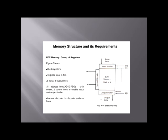Memory structure and its requirements: Read/write memory is a group of registers. This figure shows it has 2K registers, each storing 8 bits. It has 8 input lines, 8 output lines, and 11 address lines from A10 to A0. One chip select and two control lines enable the input and output buffers. It also has an internal decoder to decode address lines.